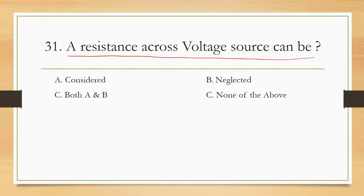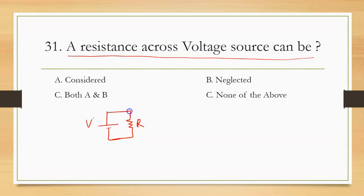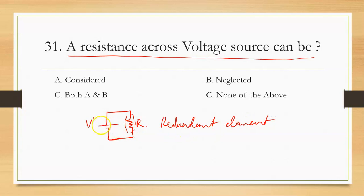The resistance across the voltage source can be — first, I have a voltage source. The voltage source, okay. This is the voltage source, this is the parallel resistance. This is the resistance — it is a redundant element. And this element across the voltage source is redundant in the circuit.